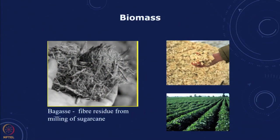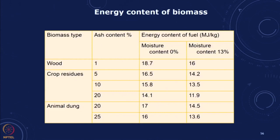Another energy source that is quite important in the Indian context is biomass. Biomass could be agricultural residues, crop residues, wastes, cattle dung, and a variety of such biomass is available. There are many different process routes for conversion of this biomass. When mapping biomass, depending on the ash content and moisture content, you have a certain energy content of the fuel — between 12 to 19 megajoules per kg. Compared to oil at about 40 megajoules and coal at about half of that, biomass is a reasonable source.